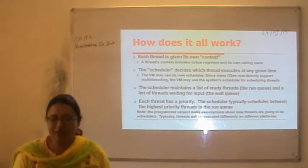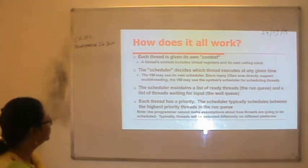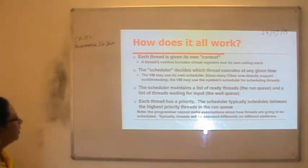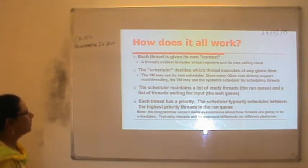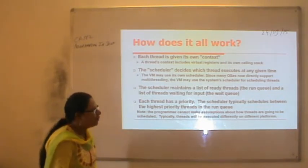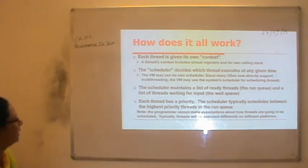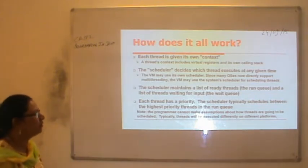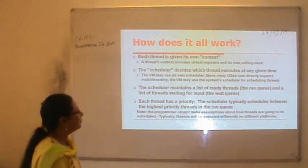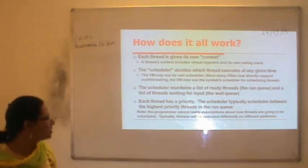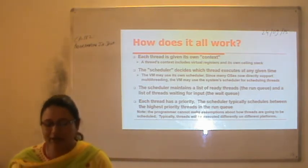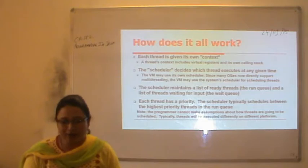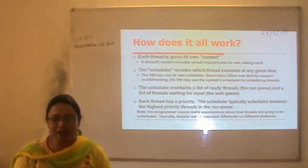How does threading work? Each thread is given its own context. A thread's context includes virtual registers and its own calling stack. There is a scheduler that decides which thread executes at any given time. Since many operating systems now directly support multi-threading, the virtual machine may use the system scheduler. The scheduler maintains a list of ready threads and threads waiting for input, and typically schedules the highest-priority ready threads in the run queue.